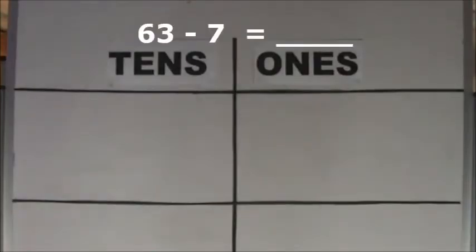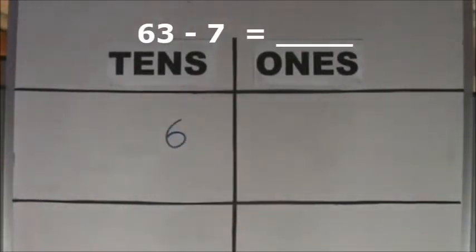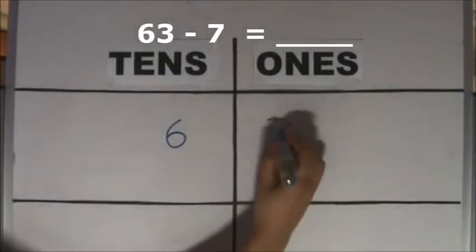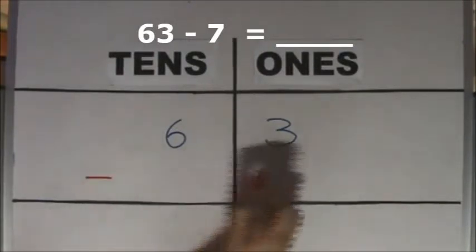How many tens are there? There are 6 tens. How many ones are there? There are 3 ones. We need to take away 7 ones. Minus 7.